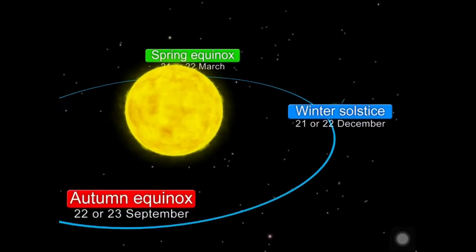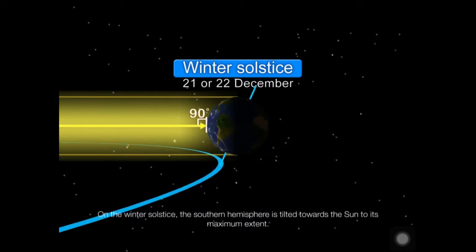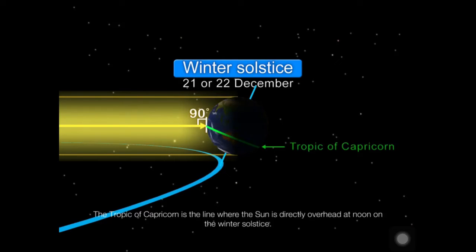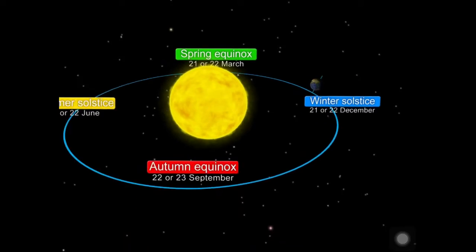On the winter solstice, the southern hemisphere tilts to its maximum extent toward the Sun. The Tropic of Capricorn is the line where the Sun is directly overhead at noon on the winter solstice. Tangential rays contour the Arctic and Antarctic circles, forming an area where the night lasts longer than 24 hours, while the opposite pole gets over 24 hours of light.